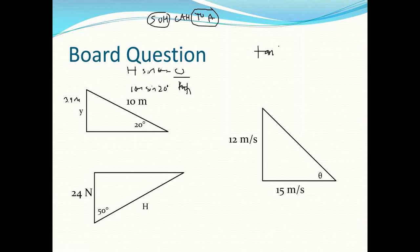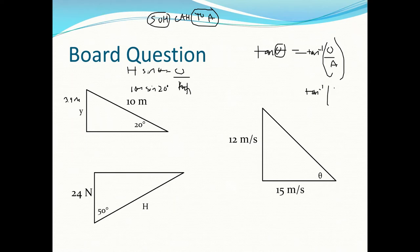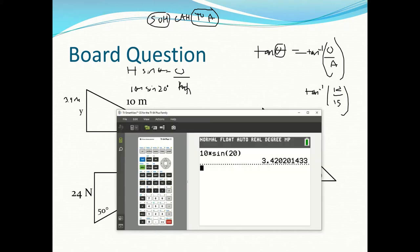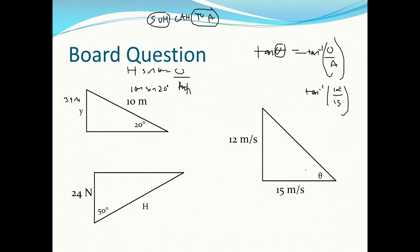For the second problem, we have opposite and adjacent, so we use tangent: tan θ = opposite/adjacent. Solving for theta gives tan⁻¹(opposite/adjacent) = 38.65°, which rounds to 39° with two significant figures.